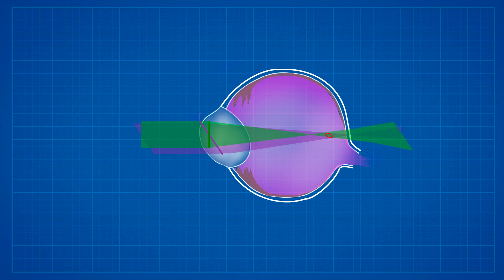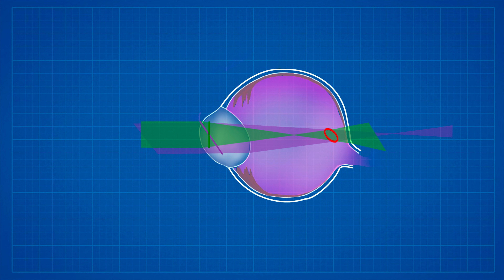If the circle of least confusion is small enough for you to see small letters clearly, then the amount of astigmatism you have is visually insignificant. However, if the circle of least confusion exceeds the critical size that you need for reading clearly, that means the astigmatism is visually significant.